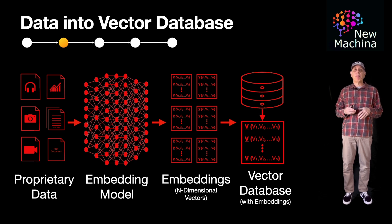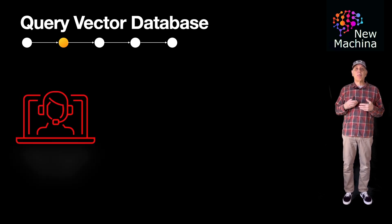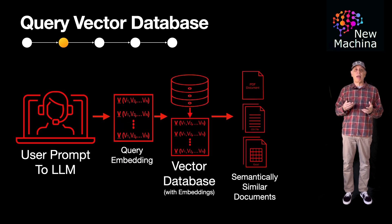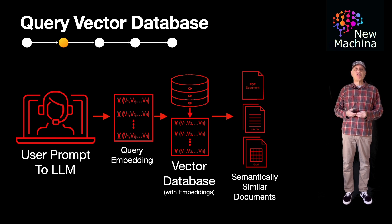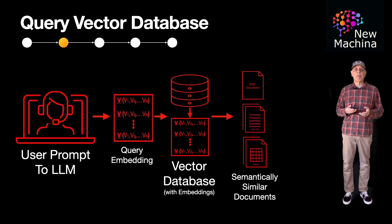Back to our use case of integrating proprietary data: after we insert our embeddings into the vector database, we then want to include relevant embeddings on any user prompts to the LLM. When a user submits a prompt, we create a query embedding from that prompt using our specialized embedding LLM. A query embedding is just a vector representation of the text in the user prompt. Next, the system queries the vector database for semantically similar documents. If similar embeddings are returned, they are paired up with the original prompt before being sent to the LLM for a response. This technique enables you to use your proprietary data with an LLM-driven system.